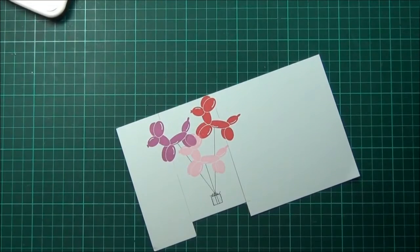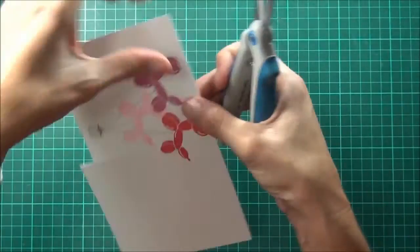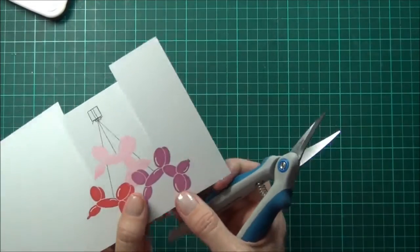You'll just need some fine scissors and then just fussy cut around the edge, leaving a small border.